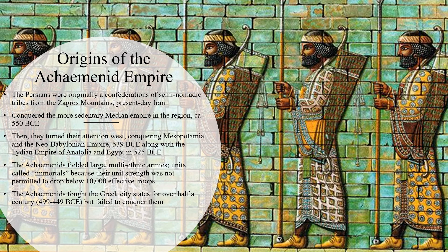The Achaemenids fought the Greek city-states for over half a century, from about 499 to 449 BCE, but they failed to conquer all of the Greek city-states — at least in Greece. They did conquer some of the Greek colonies in Anatolia, in what is now Turkey.